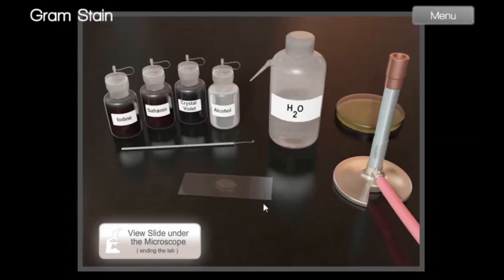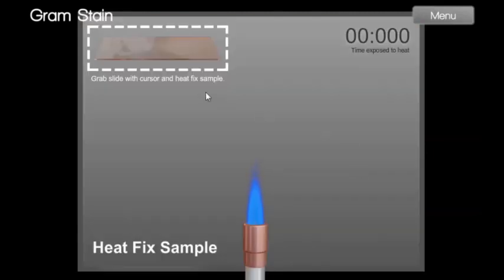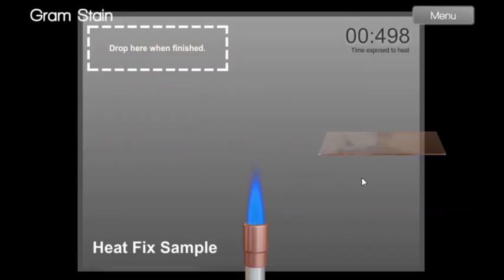To begin, step 1: Heat fix the slide. Click on the Bunsen burner. Pass the slide gently 2 or 3 times, 1 to 2 seconds through the flame. Do not overheat. This will cause distortion of the cells.